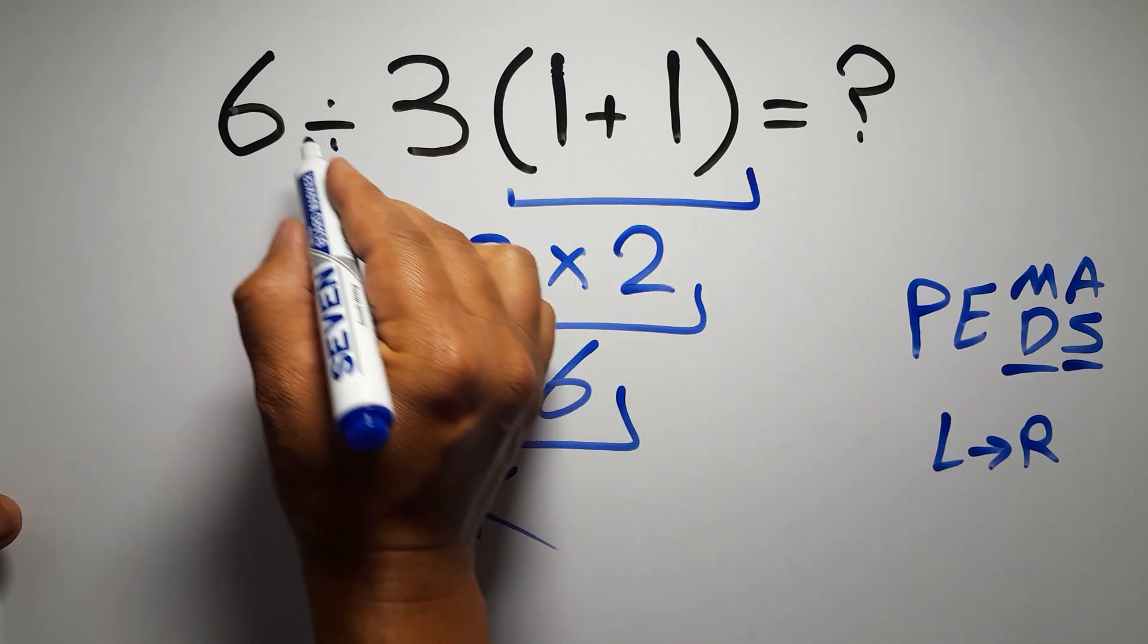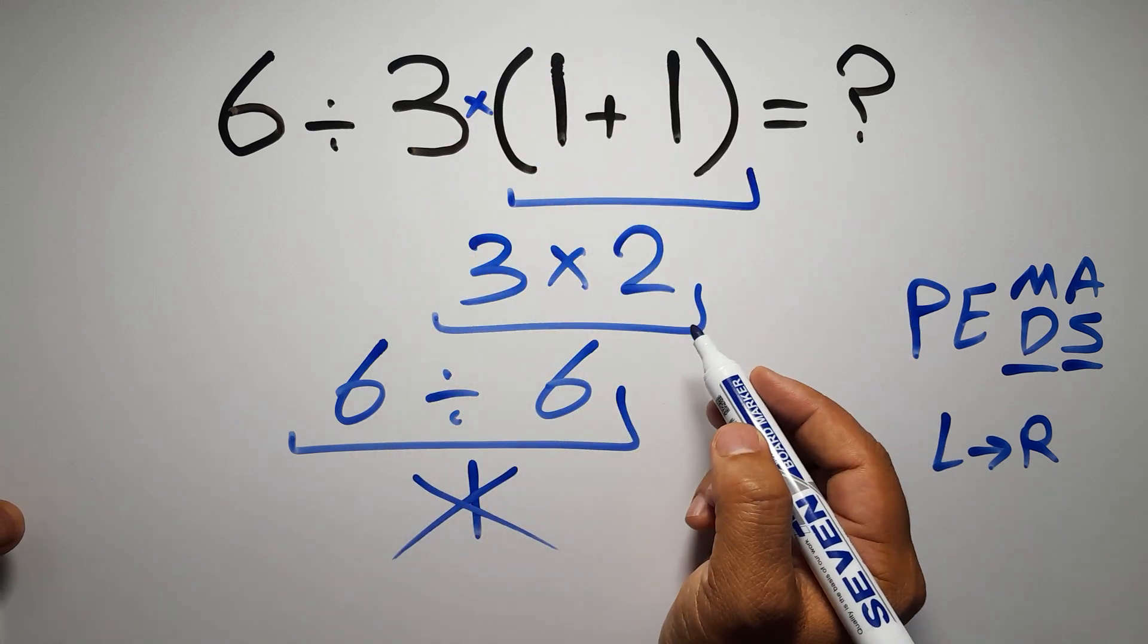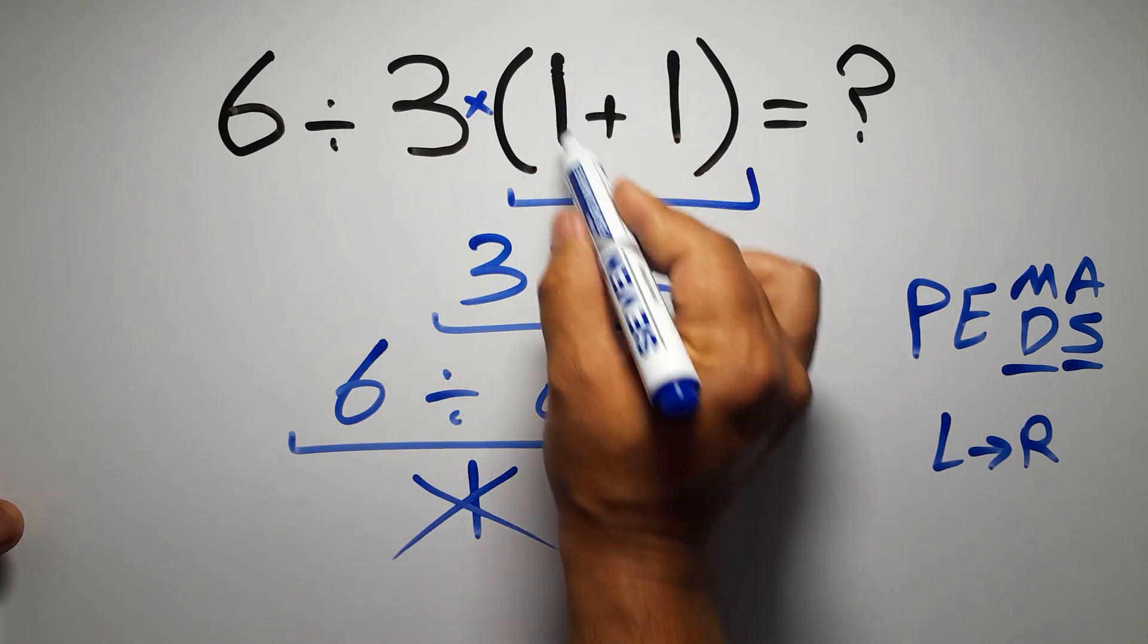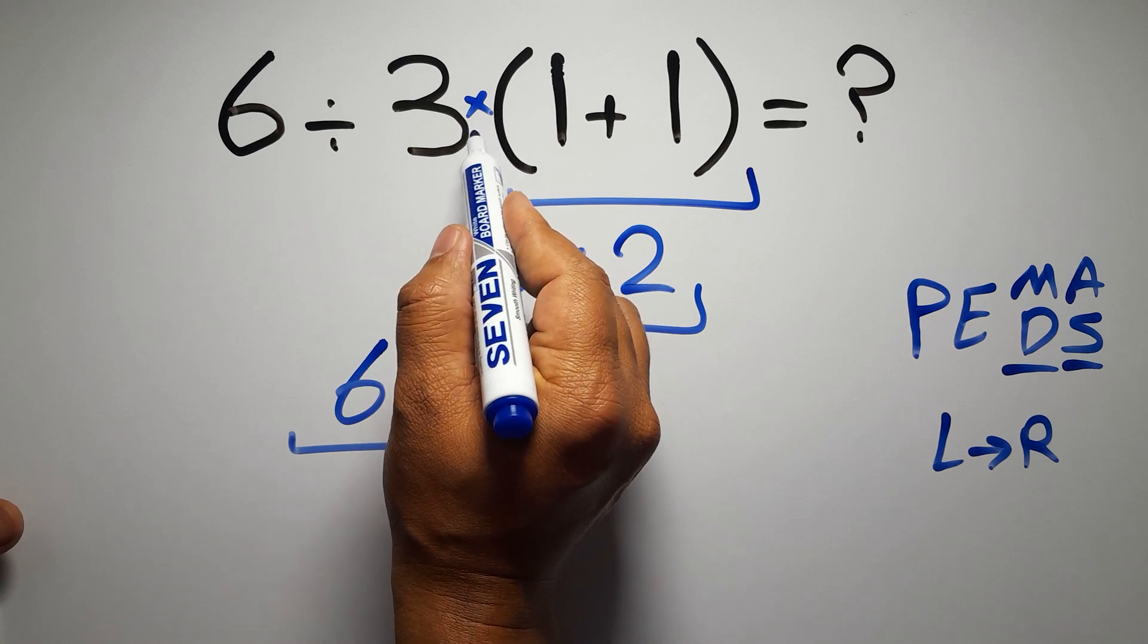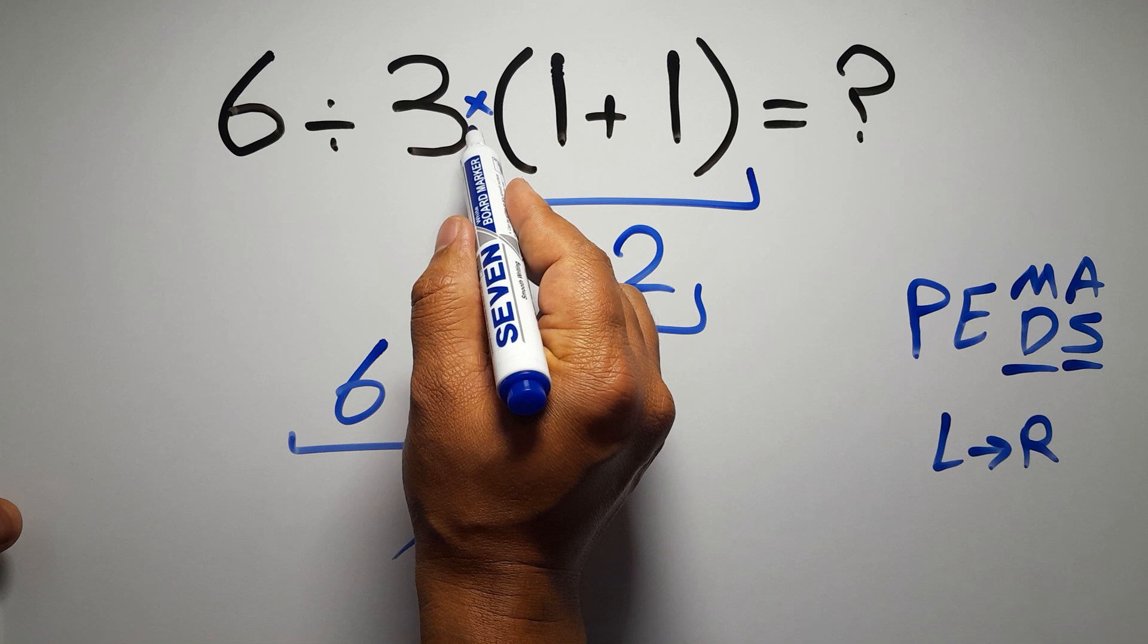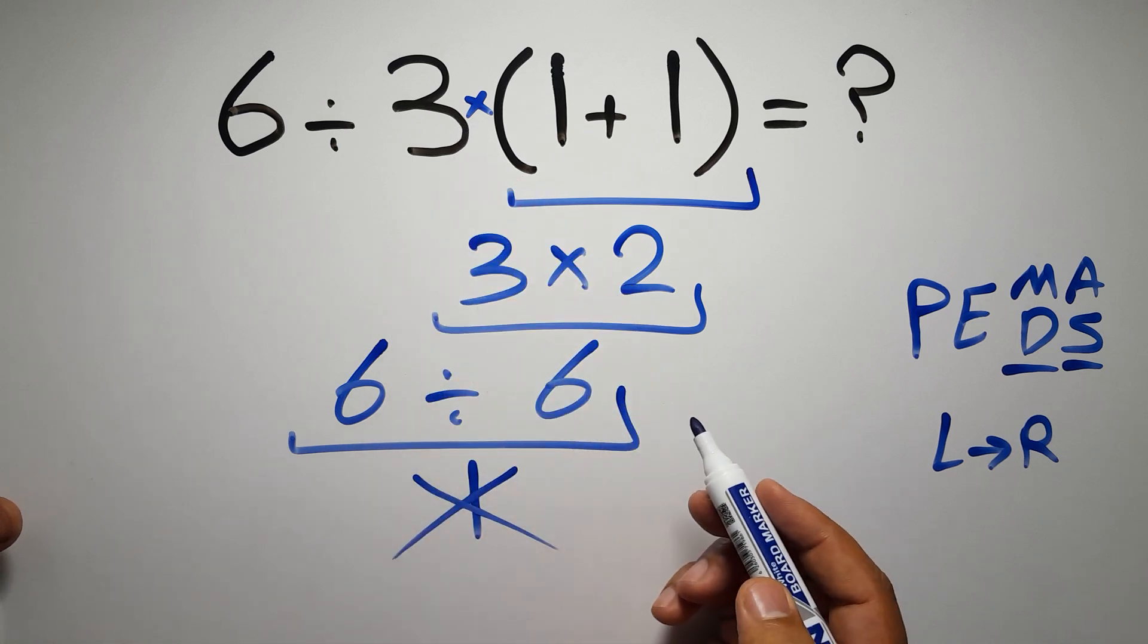In this expression, we have one division, one multiplication, and one parenthesis. Inside these parentheses, we have one addition. Here we have a multiplication, because in mathematics, when a number is placed next to parentheses, it means multiplication, and we usually don't write the multiplication sign for brevity.